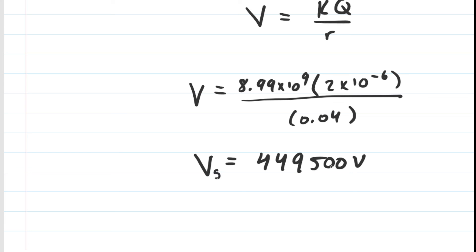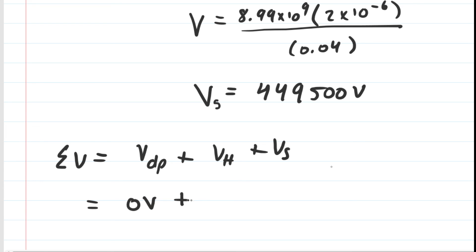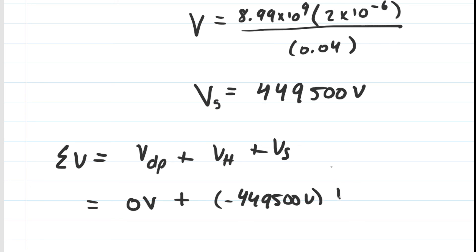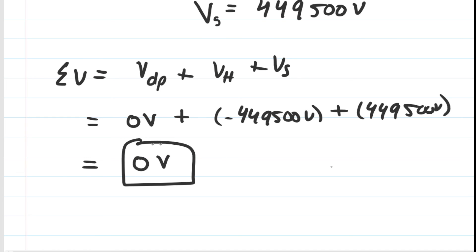The total potential is the potential from the dipole, the head, and the smile. The dipole produced 0 volts, the head produced negative 449,500 volts, and the smile produced positive 449,500 volts. So after all this work, the total electric potential at the center of the circular smiley face is 0 volts. All that work, literally for nothing, is the final answer.